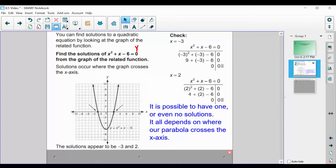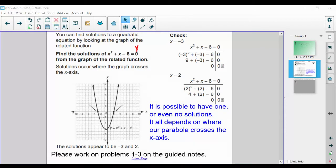We want to make sure we end up getting a true statement of 0 = 0, and it looks like we have that for both situations. So indeed, the solutions are -3 and positive 2. With this in mind, please work on problems 1 through 3 on the guided notes and resume when you're ready to move on.